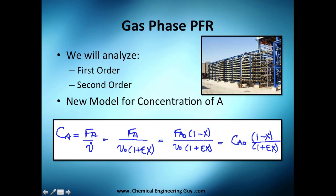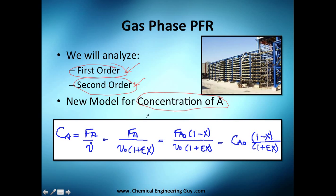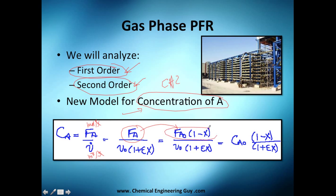We're going to model first order and second order reactions across two videos — this one covers first order, the next covers second order. We need a new model for concentration, which we actually already know from chapter 2. By definition, the concentration of A is moles per second divided by volumetric flow rate (volume per second), giving moles per volume. F_A changes with conversion, and volume changes depending on the change in moles and conversion.